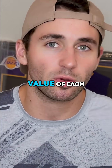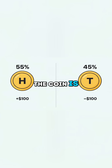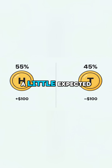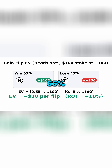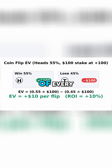So what's the expected value of each $100 bet? It's pretty simple. 55% of the time you're going to make $100 — the coin is going to show up on heads. The other 45% of the time the coin is going to show up on tails, and you're going to lose $100. You can set up a simple expected value equation: 55% of the time you win $100, 45% of the time you lose $100. If you work out the math, you'll see that the expected value of every $100 bet, every coin flip, is $10.